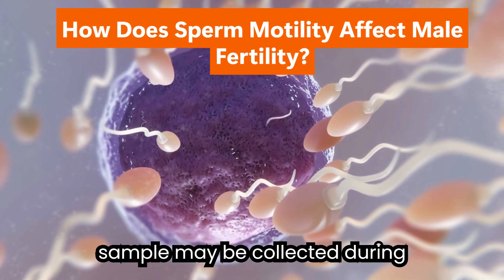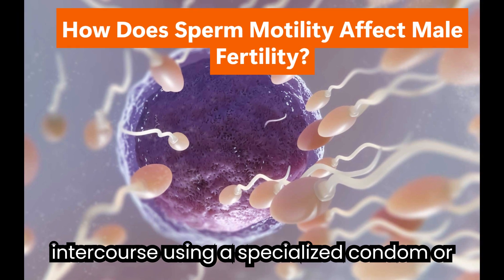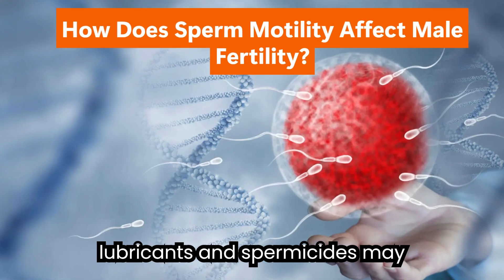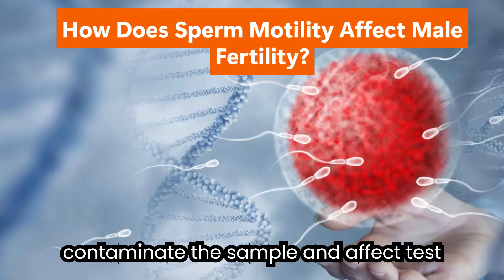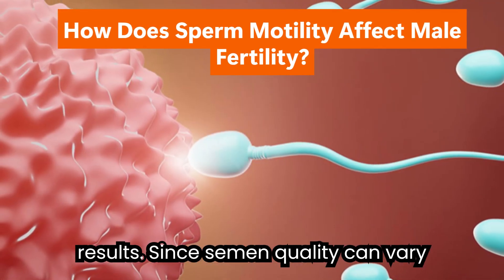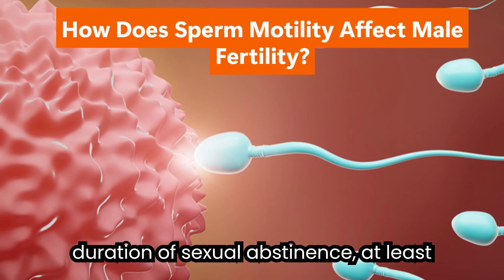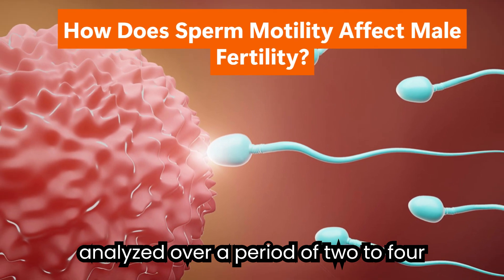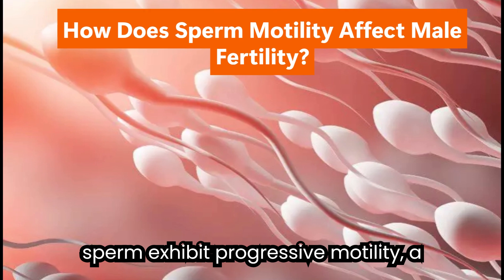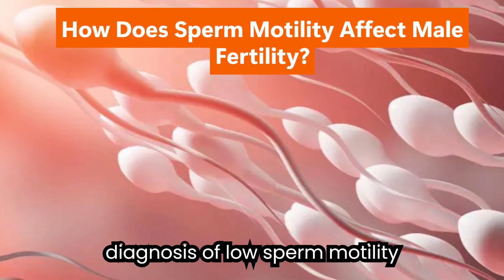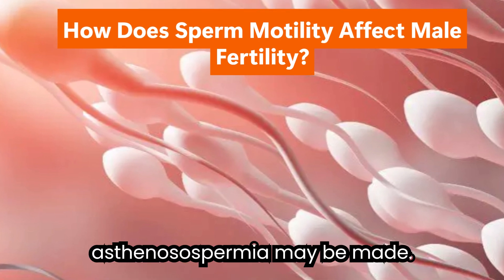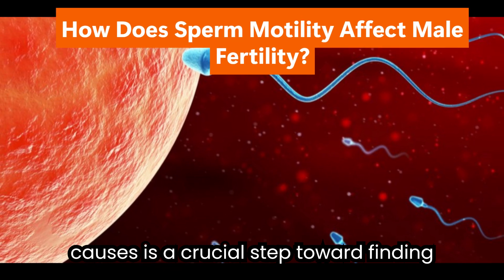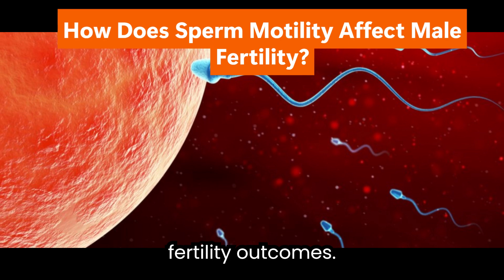If collected at home, the sample must be delivered to the testing facility within one hour and kept at body temperature during transportation; refrigeration is not recommended. In some cases, a sample may be collected during intercourse using a specialized condom or through the withdrawal method — commercial condoms should not be used, as their lubricants and spermicides may contaminate the sample. Since semen quality can vary due to factors like recent illness or duration of abstinence, at least two separate samples are typically analyzed over two to four weeks. A diagnosis of low sperm motility (asthenozoospermia) is made when fewer than 32% of sperm exhibit progressive motility.